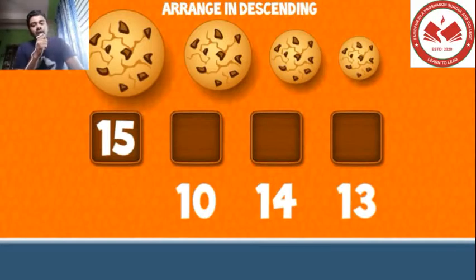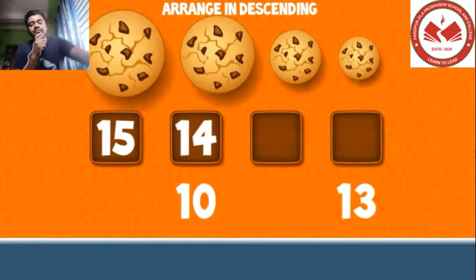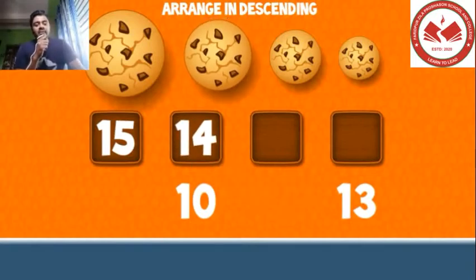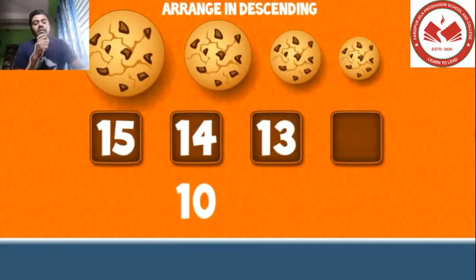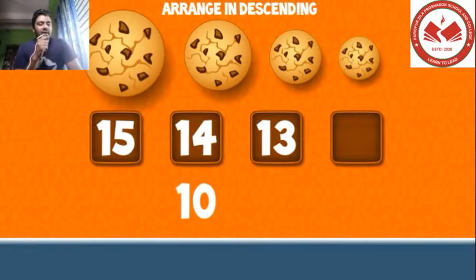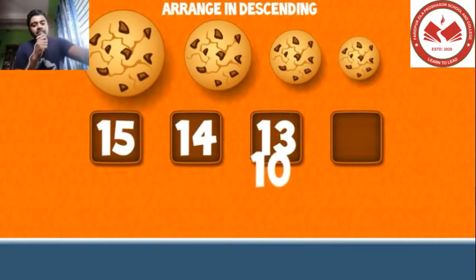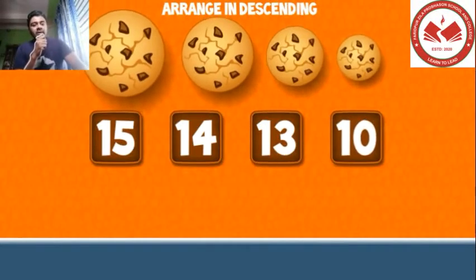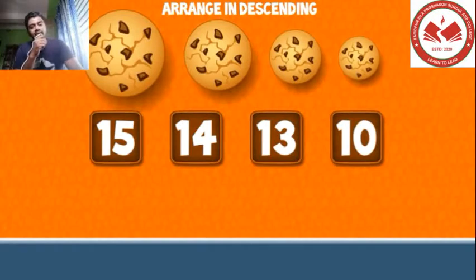15, 10, 14, 13. So let's put 10 in the last box to complete the series. This is called arrangement of numbers from greater to smaller: 15, 14, 13, 10.